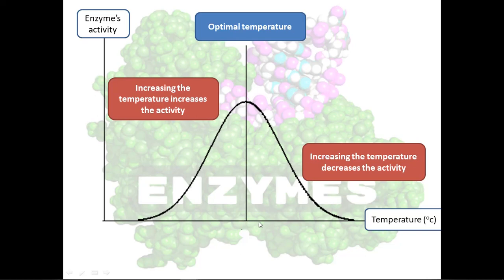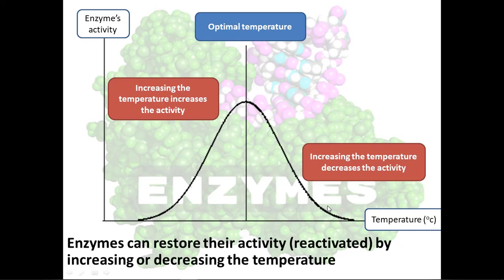After the optimal temperature, when we increase the temperature further, the activity of the enzyme decreases. In this part, the effect is reversible — the effect of temperature is reversible until we reach a certain point, after which the enzyme is denatured and the nature of the enzyme is changed, after which the effect of temperature cannot be reversed.